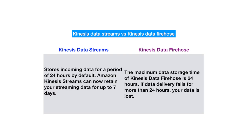Kinesis Data Streams stores incoming data for 24 hours by default, but it can retain streaming data for up to seven days with an explicit request to AWS. On the other hand, the maximum data retention time for Kinesis Data Firehose is 24 hours — if data delivery fails for more than 24 hours, the data is lost with no recovery option.